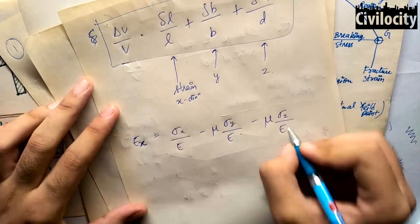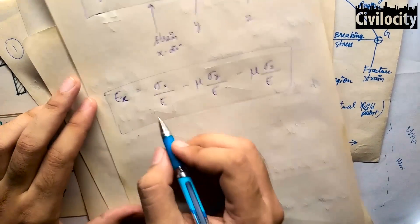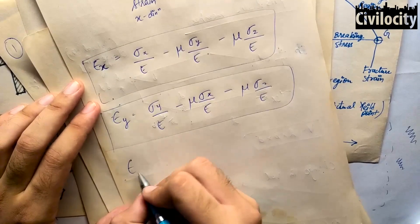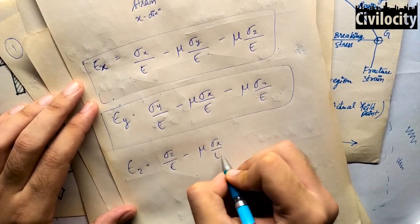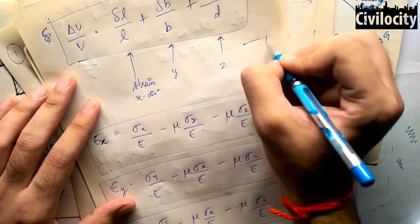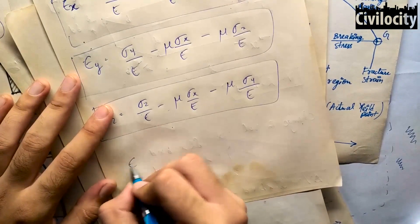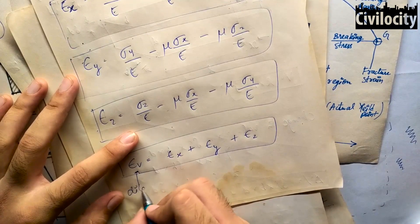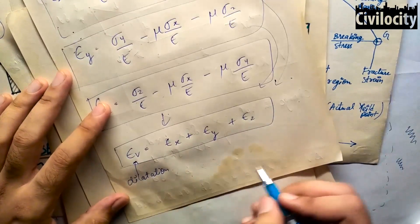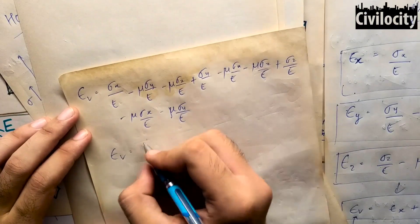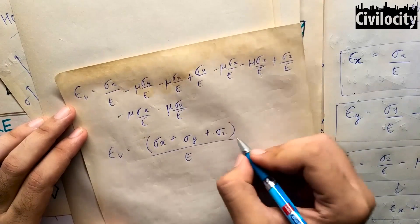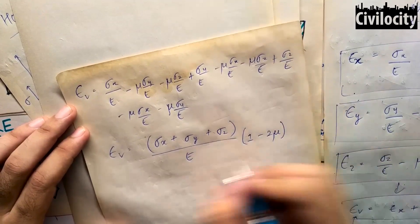Strain in the x-direction is the longitudinal strain sigma x/E minus lateral strains nu·sigma y/E and nu·sigma z/E. Similarly, delta B/B equals sigma y/E minus nu·sigma x/E minus nu·sigma z/E, and delta D/D equals sigma z/E minus nu·sigma x/E minus nu·sigma y/E. From equation 1, volumetric strain equals strain in x plus strain in y plus strain in z, also called dilatation. Combining all terms gives: volumetric strain equals (sigma x + sigma y + sigma z)/E times (1 - 2·nu).